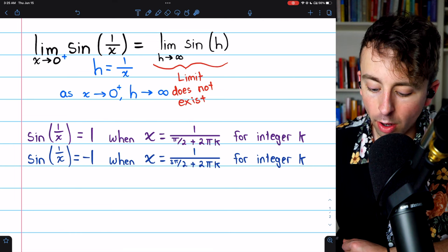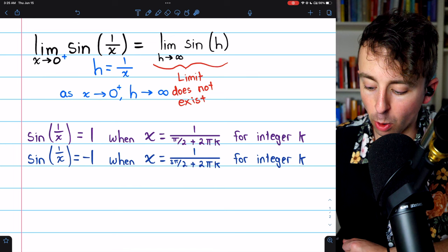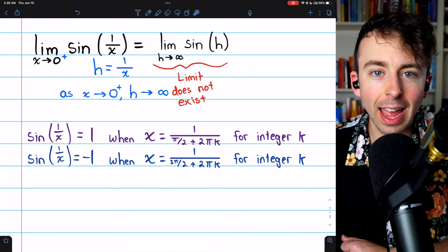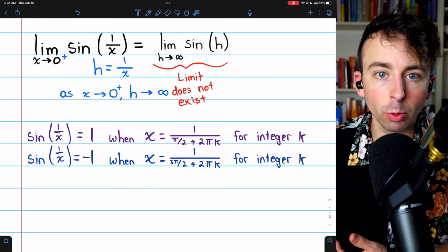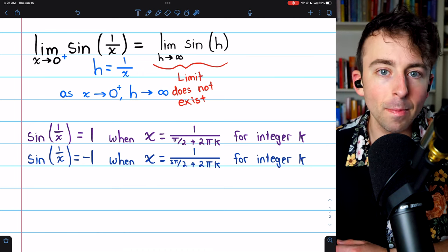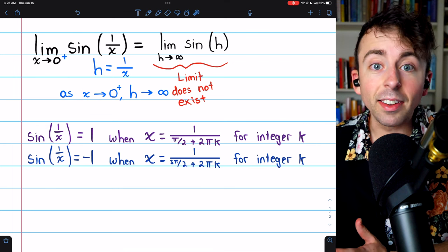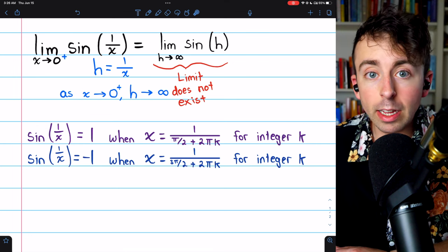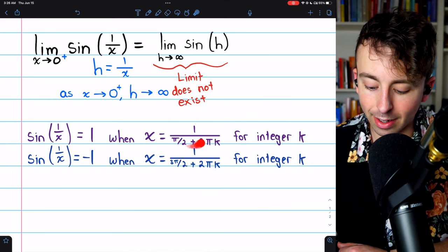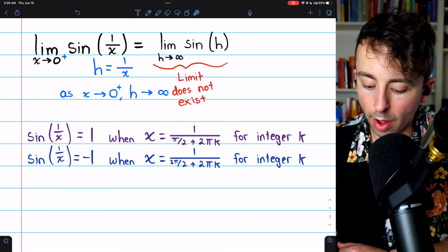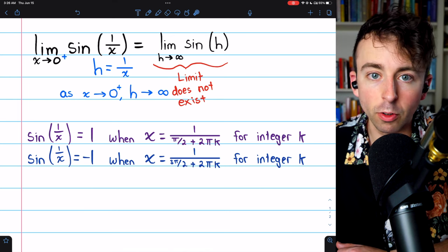Certainly, 1 over pi over 2 plus 2 pi k for integer values of k will approach 0 from the left or from the right as the integer k becomes more negative or more positive. That means that as x approaches 0, there are infinitely many times where it will take on a value like this. A value in the form 1 over pi over 2 plus 2 pi times some integer k.